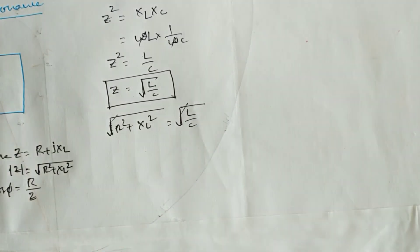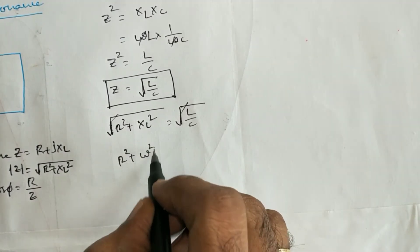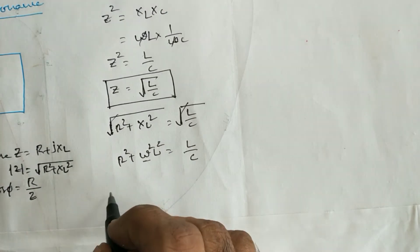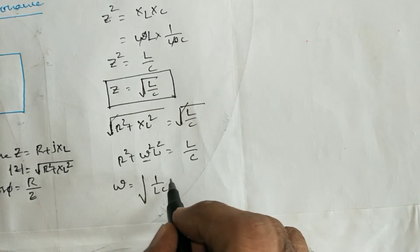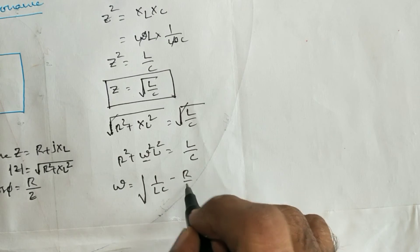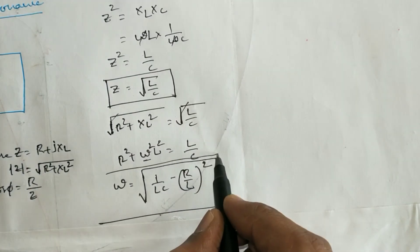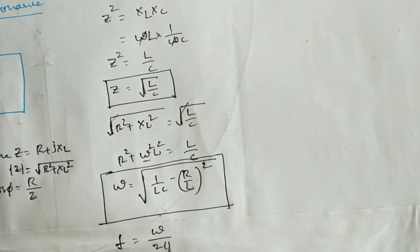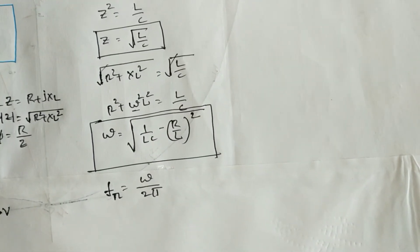The magnitude of impedance Z = √(R² + X_L²) = √(L/C). Squaring both sides: R² + ω²L² = L/C. Solving for omega, we get the resonant angular frequency ω = √(1/(LC) − (R/L)²). Once we find omega, the resonant frequency is f_r = ω/(2π).